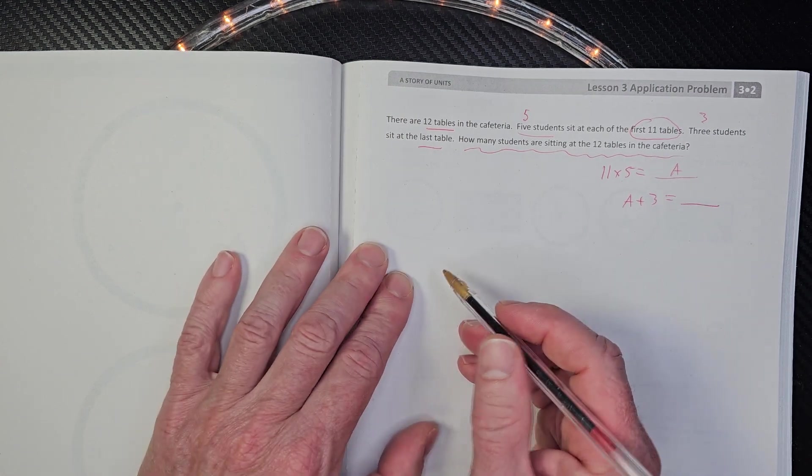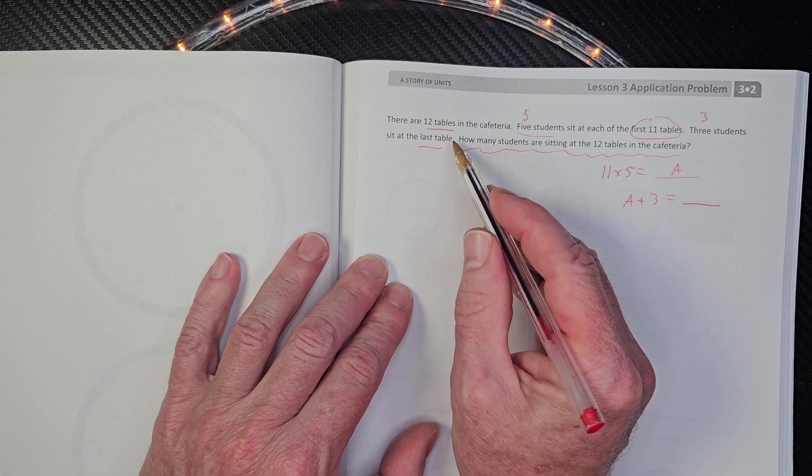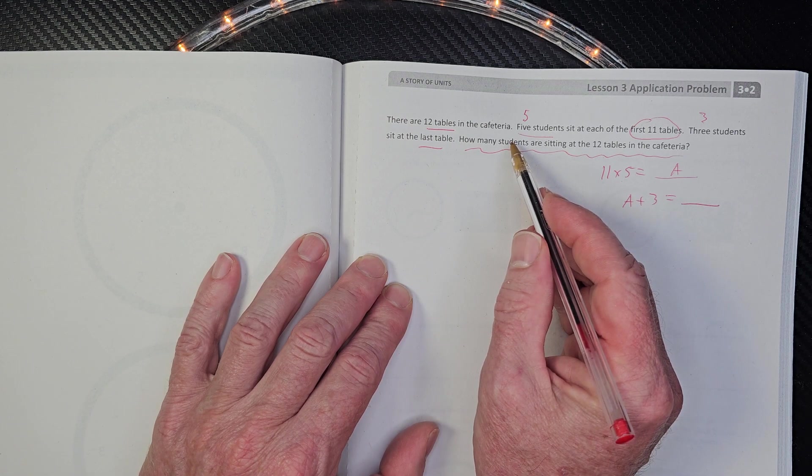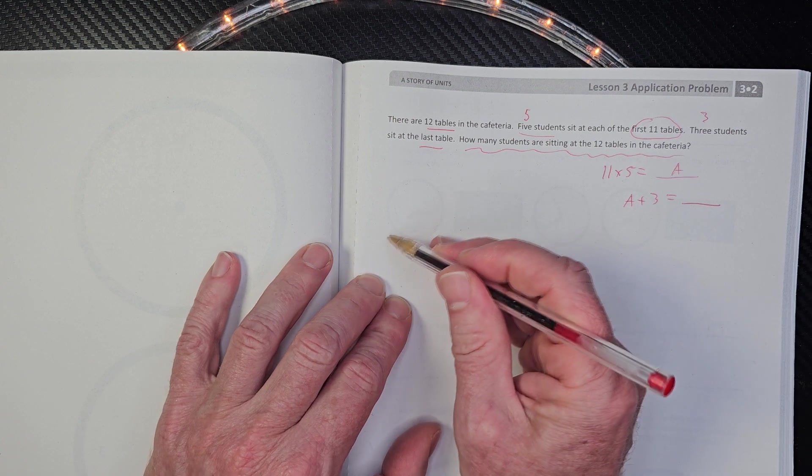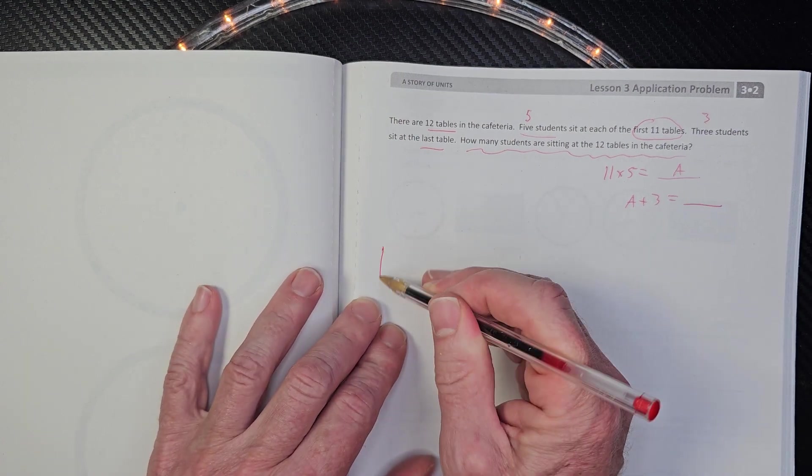And then that would be a plus three equals your answer here. So what's the math problem? All right. So right now, 12 tables. We don't need to do 12 tables. We just want 11 tables. So you can draw 11 tables if you want to.